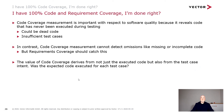Even with 100% requirements coverage, we're not completely done. Code coverage tells us what code has been tested, can point out dead code and insufficient test cases, but can't detect omissions like missing or incomplete code. Requirements coverage can help here — if we don't have 100% requirements coverage but do have 100% code coverage, that mismatch tells us we need to write more code to handle unimplemented requirements. The value of code coverage derives not just from the executed code, but from the test case intent: was the expected code executed for each test case, both in expected values and flow control?